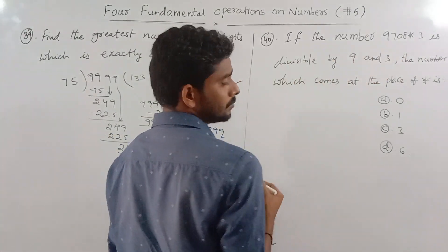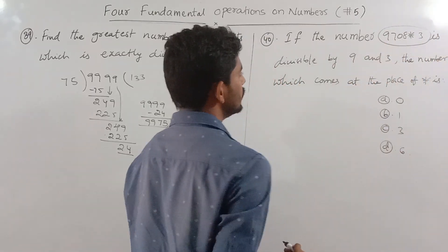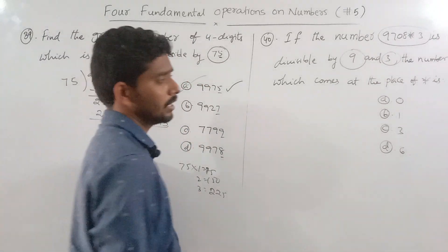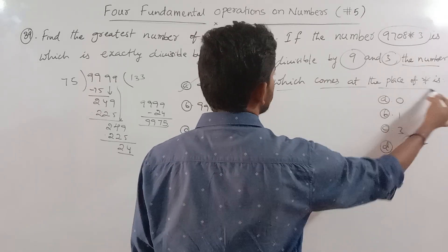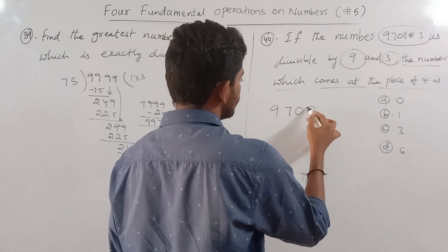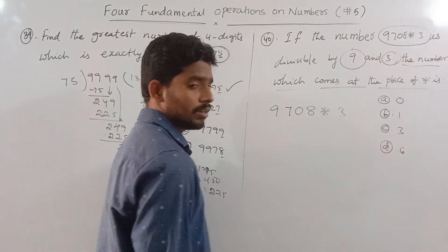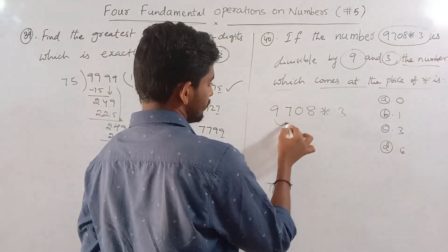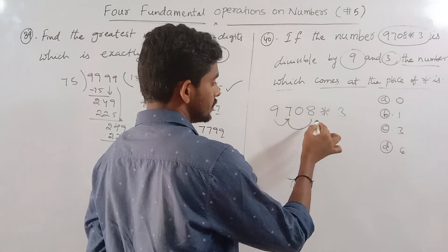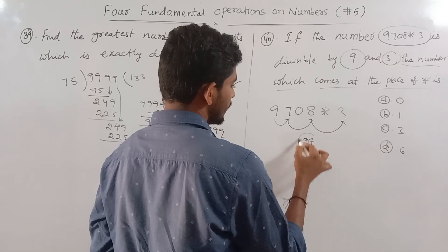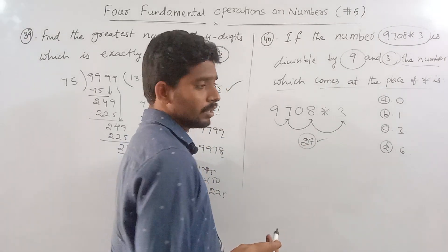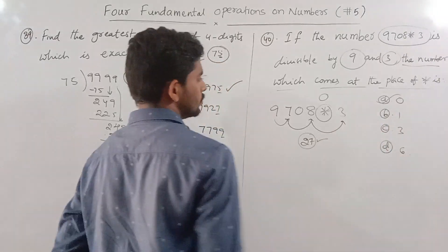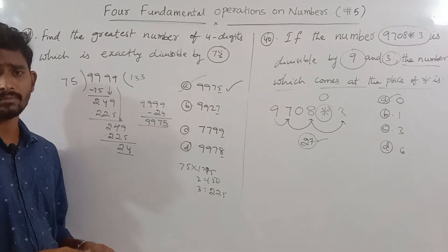If the number 978 star 3 is divisible by 9, find the digit at the star place. Divisibility rule for 9: the sum of all digits must be a multiple of 9. Adding 9 plus 7 is 16, plus 8 is 24, plus 3 is 27. Since 27 is already a multiple of 9, the star equals 0.